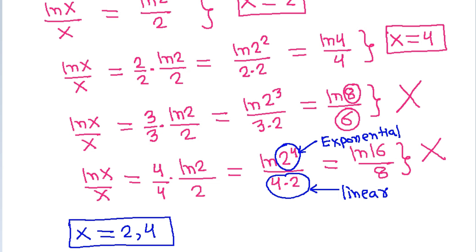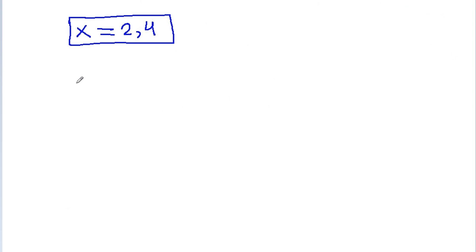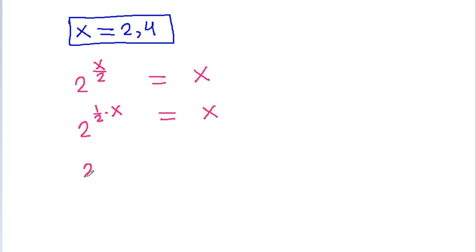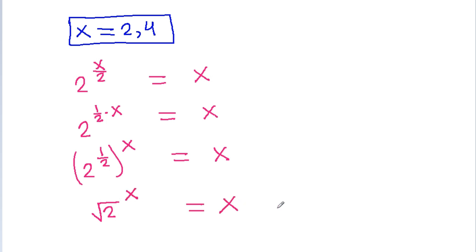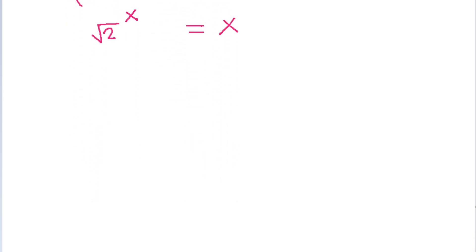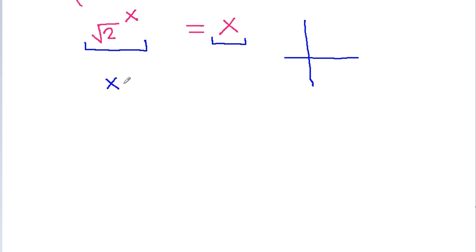And also, we have 2 power x by 2 is equal to x, and it is 2 power 1 by 2 times x, x is equal to x, and it is 2 power 1 by 2 times x. So we have 2 equations: y is equal to square root of 2 power x, and y is equal to x. And we know that x is positive.